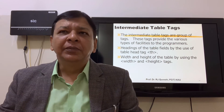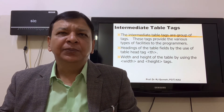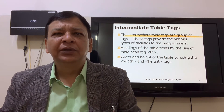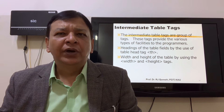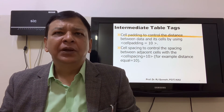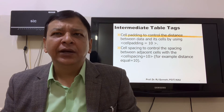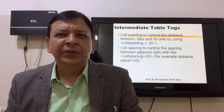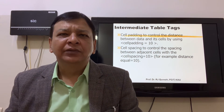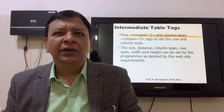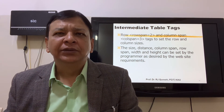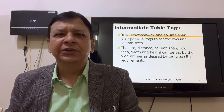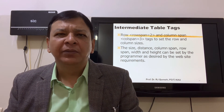Intermediate table tags. The intermediate table tags are a group of tags that provide various types of facilities to programmers: heading of table fields using table tags, th width and height using width and height tags, cell padding to control the distance between data and cells, cell spacing tag equal to 10 — for example, distance equal to 10. Row span is equal to 2, column span is equal to 3. The size, distance, column span, row span, width, and height can be set by the programmer as desired by the website requirement.